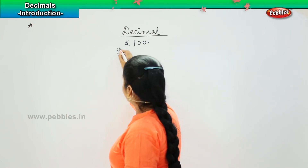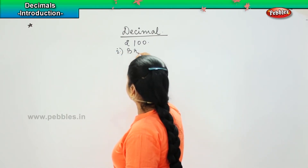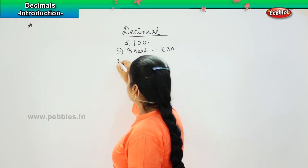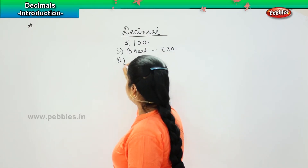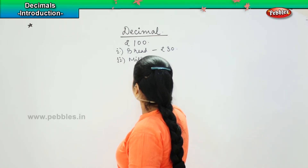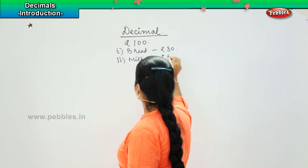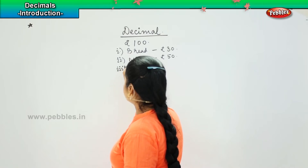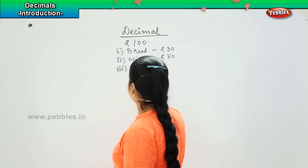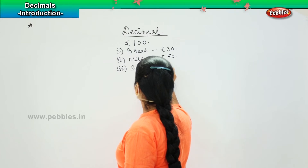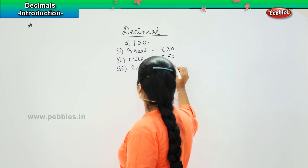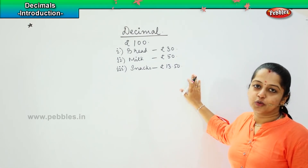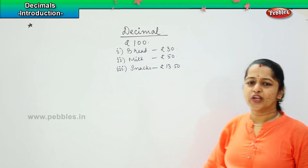She told me to buy bread, which cost me rupee thirty. She asked me to buy milk, that cost me rupee fifty. And then she told me I can buy some snacks for myself, that cost me rupee thirteen point five zero. So these are the items that my mother asked me to purchase going to a grocery shop.